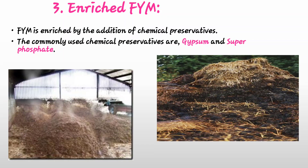The third method is the enriched FYM method. In this method, chemical preservatives like gypsum (calcium sulphate) and superphosphate are mainly used. These chemical preservatives are added to FYM to decrease nitrogen losses — losses from evaporation or leaching. The preservatives are applied in the cattle shed to permit direct contact with the liquid portion or urine.